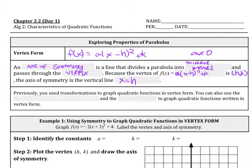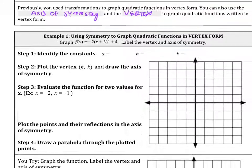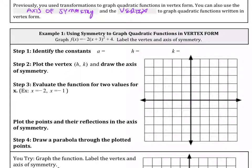Previously you used transformations to graph quadratic functions in vertex form. You can also use the axis of symmetry and the vertex to graph quadratic functions written in vertex form. We're going to use symmetry to graph quadratic functions in vertex form.